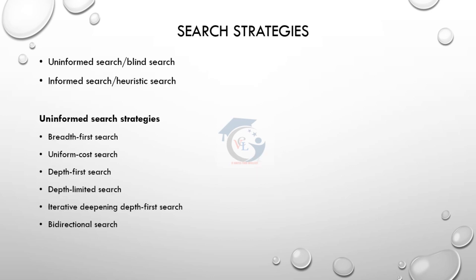There are two different types of search strategies: uninformed search, also called blind search, and informed search, also called heuristic search. Uninformed search does not use additional details beyond the problem definition. With informed search, complex problems can be solved more easily.